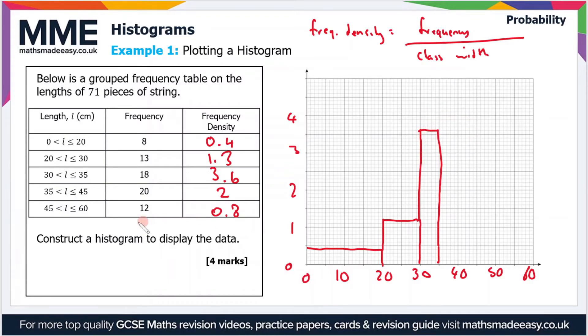The next one is from 35 to 45, and that has a frequency density of 2. So we'll go from 35 to 45, up to 2.